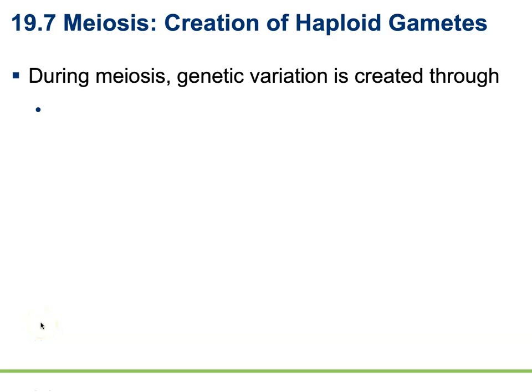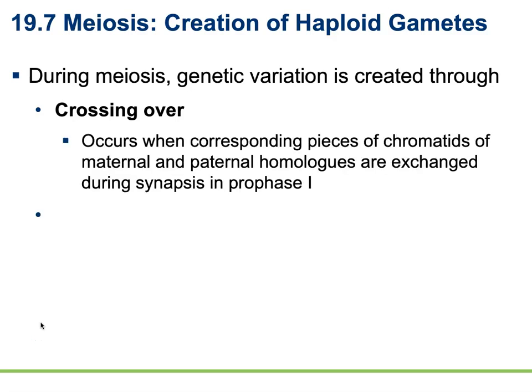In this last section of meiosis, we're going to talk about how genetic variation is created, specifically through what is known as a crossing over event. A crossing over event occurs during the synapsis of prophase I of meiosis I. This occurs when the corresponding pieces of chromatids of maternal and paternal homologues are exchanged during synapse at prophase I.